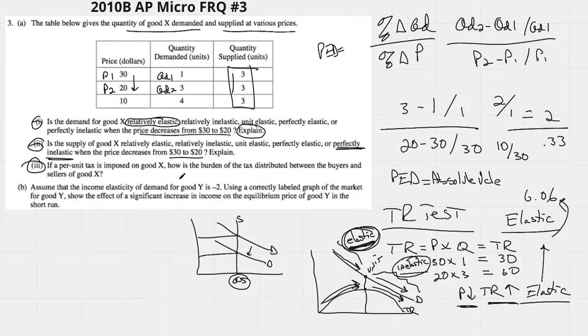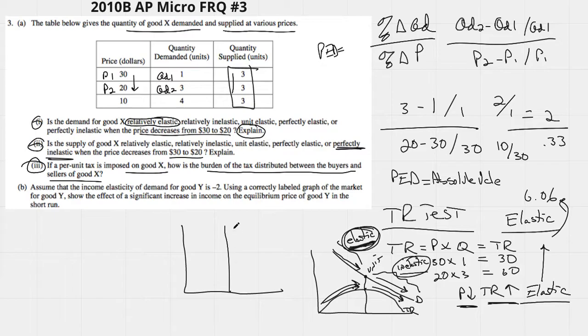If a per unit tax is opposed on good X, how is the burden of the tax distributed between the buyers and the sellers of a good? So, this is just the understanding, and I think this one is hard unless you can sort of see it. Maybe even just understand that when we have a perfectly inelastic supply.